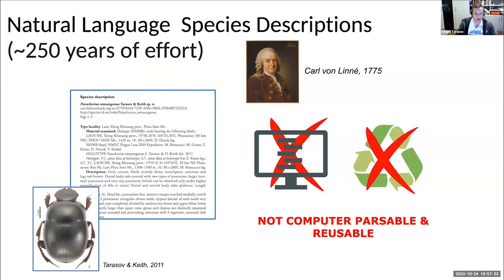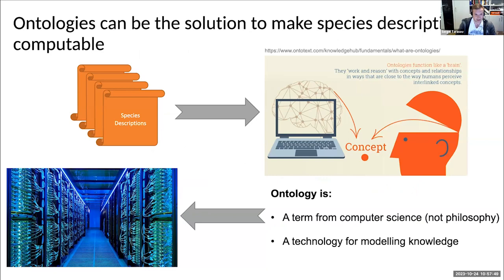However, species descriptions come in natural language, and natural language is not really understandable by computers, which makes species descriptions not really reusable by following studies. Ontologies can be a solution to solve this problem.